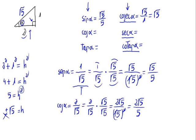As we did previously, we take the pre-rationalized result to calculate the inverse function without needing to rationalize again. So the secant of alpha equals the square root of 5 divided by 2.